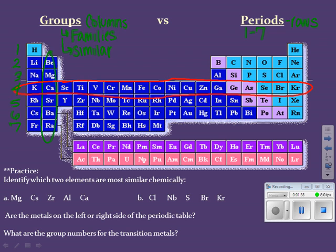Before we move on, let's break down the periodic table into metals and non-metals. There is a dividing line called the stair step line because when you draw it in, it looks like a staircase. This divides our periodic table into the main types of elements. Elements on the left side of the stair step line are metals, and elements on the right side are non-metals.